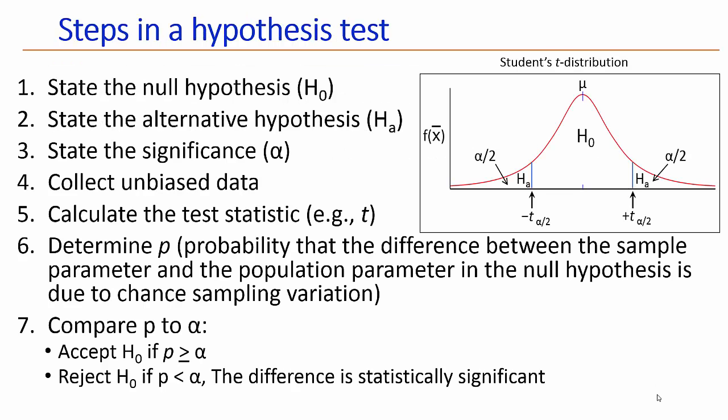There are seven formal steps in conducting a statistical hypothesis test. The first step is to state the null hypothesis, abbreviated as H subscript 0. That's a statement of a population parameter. For example, you might say your population parameter has a population mean of some value. The second step is to state the alternative hypothesis, abbreviated as H subscript A.